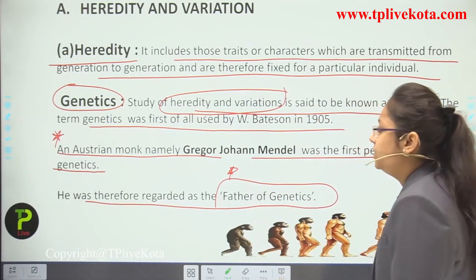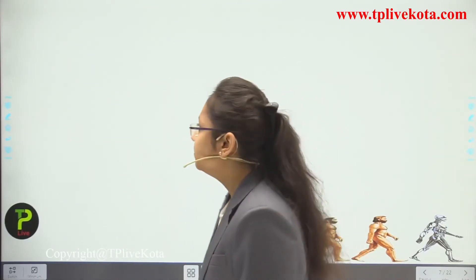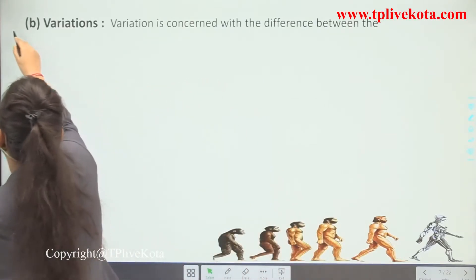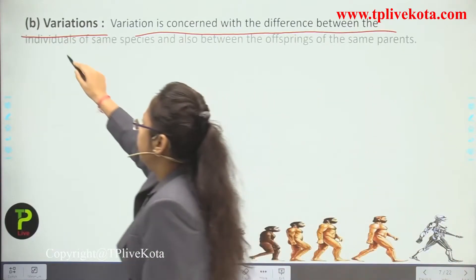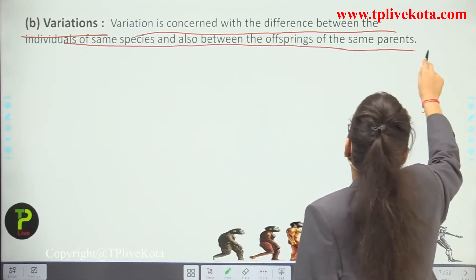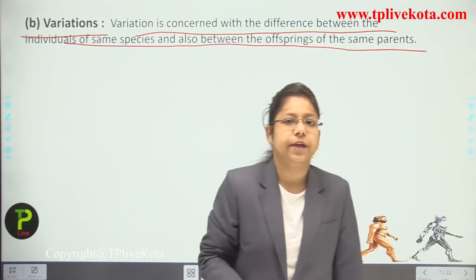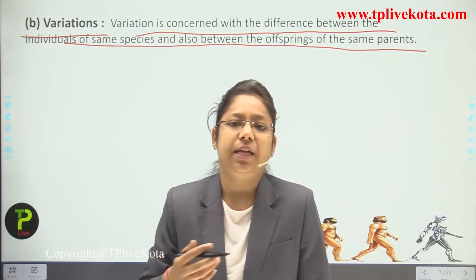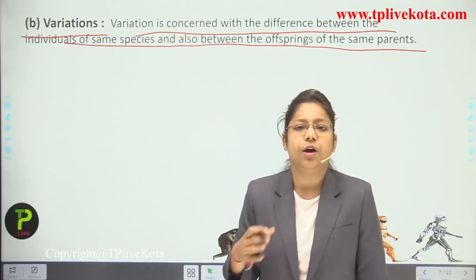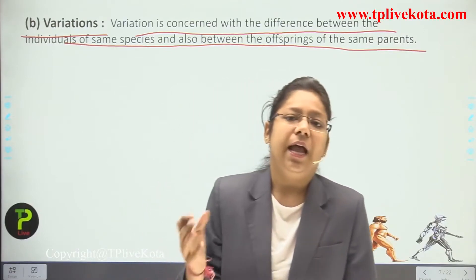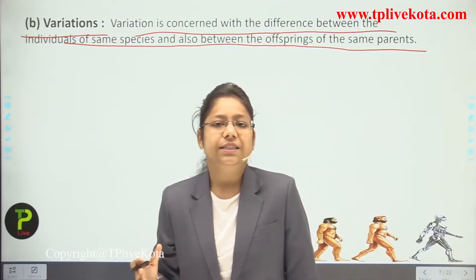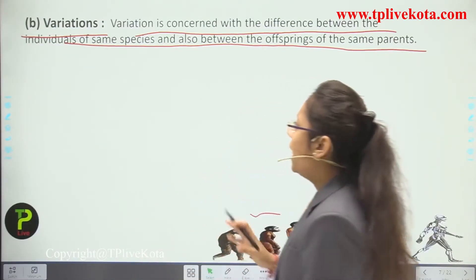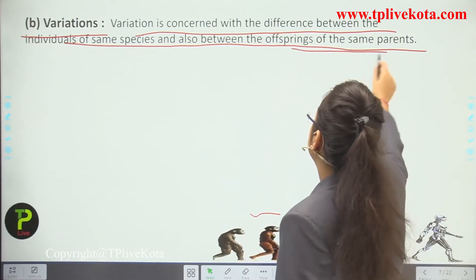Mendel was therefore regarded as the father of genetics. Variation is concerned with differences between individuals of the same species and also between offspring of the same parents. We are homo sapiens, developing new characters each day and transferring them to our offspring. Offspring of the same parents carry certain characteristics of both mother and father because they received genes from both — and these characters or traits can be visualized by physiological methods.